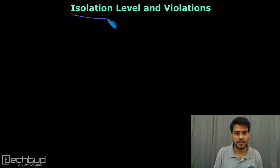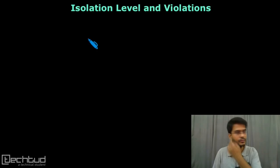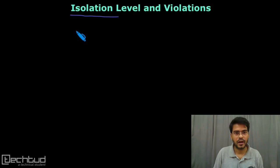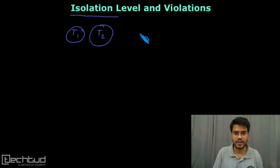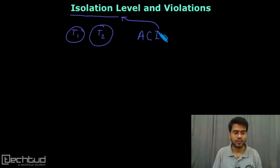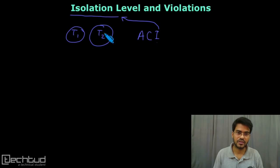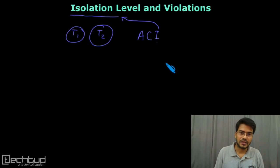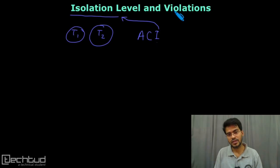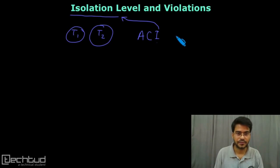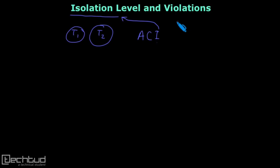Isolation level. As the name suggests, isolation is the isolation of two transactions T1 and T2 from each other. When we studied ACID properties, the 'I' stands for isolation. The idea is to have transactions isolated from each other, and for that we have various isolation levels defined in SQL. Related to each isolation level, we also have some violations — which isolation level is strict and which one has some violations allowed. Before we list isolation levels and violations, let's understand what violations are.